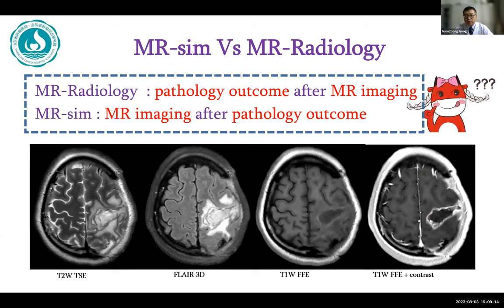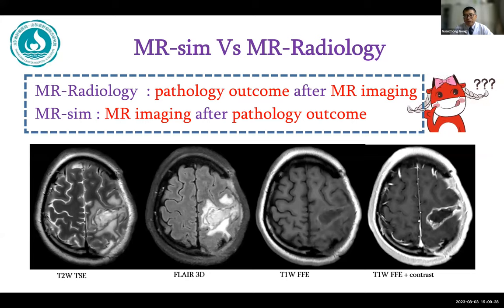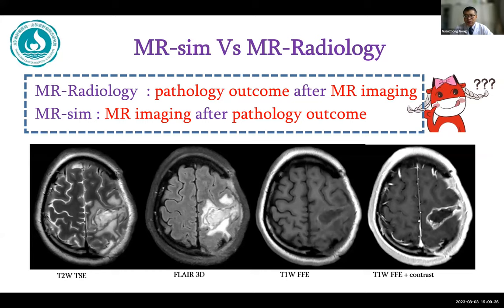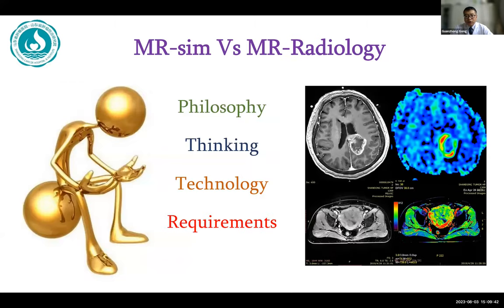We not only need to see where the tumor is, but also to see the boundary of the tumor clearly and accurately. It is easy to see where the tumor is, but the boundary is very difficult. More importantly, we should be able to evaluate the biological details of the organ and tumor objectively, which will provide more information for radiation therapy. Therefore, a series of changes must be made when applying MRI simulation, such as changes in philosophy, thinking, technology, and requirements.